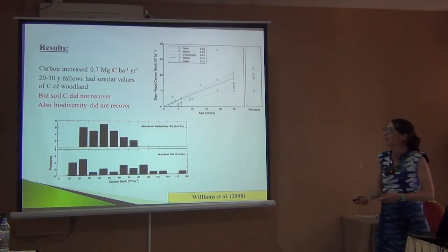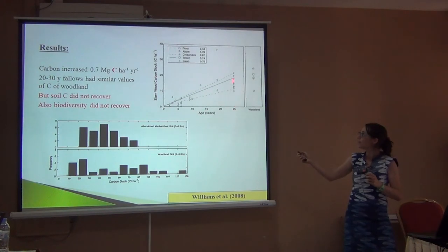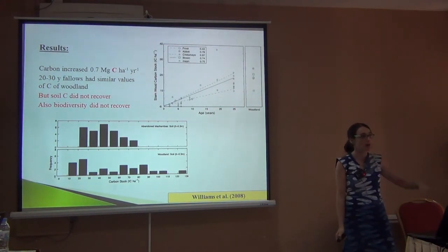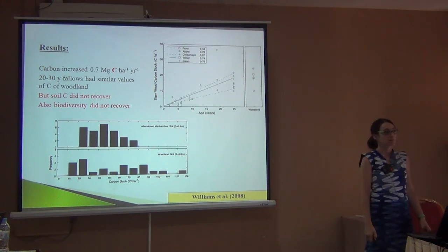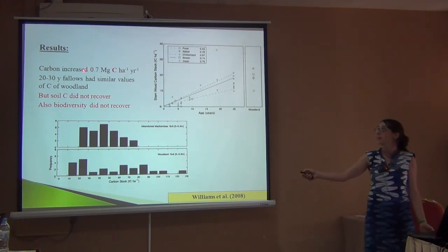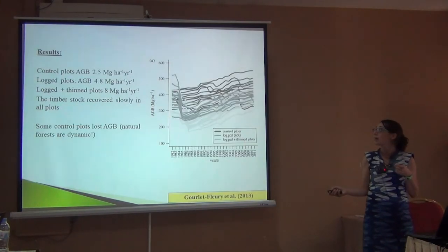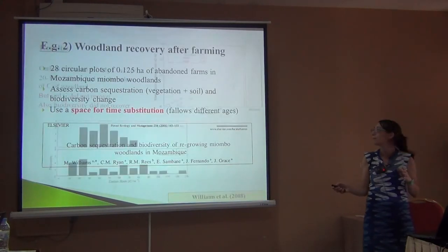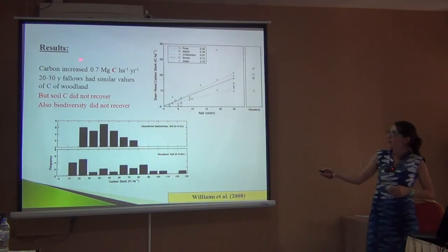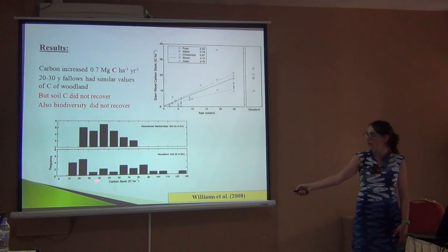They estimated that after about 25 years, abandoned fields slowly growing back to woodland have as much carbon as the natural woodland — that's pretty fast. But look at the number: 0.7 megagrams of carbon, about 1.4 megagrams of biomass. That's a woodland. Compare it to a forest, which even before recovery was already accumulating far more. And look at the soil: 30 years later, no change in soil carbon compared to natural woodland.